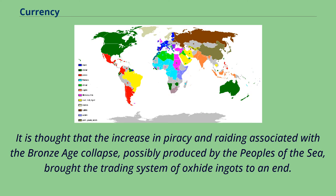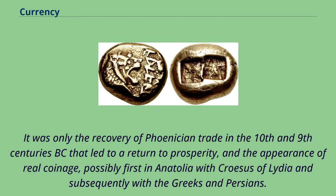It is thought that the increase in piracy and raiding associated with the Bronze Age collapse, possibly produced by the peoples of the sea, brought the trading system of oxide ingots to an end. It was only the recovery of Phoenician trade in the 10th and 9th centuries BC that led to a return to prosperity and the appearance of real coinage, possibly first in Anatolia with Croesus of Lydia and subsequently with the Greeks and Persians.